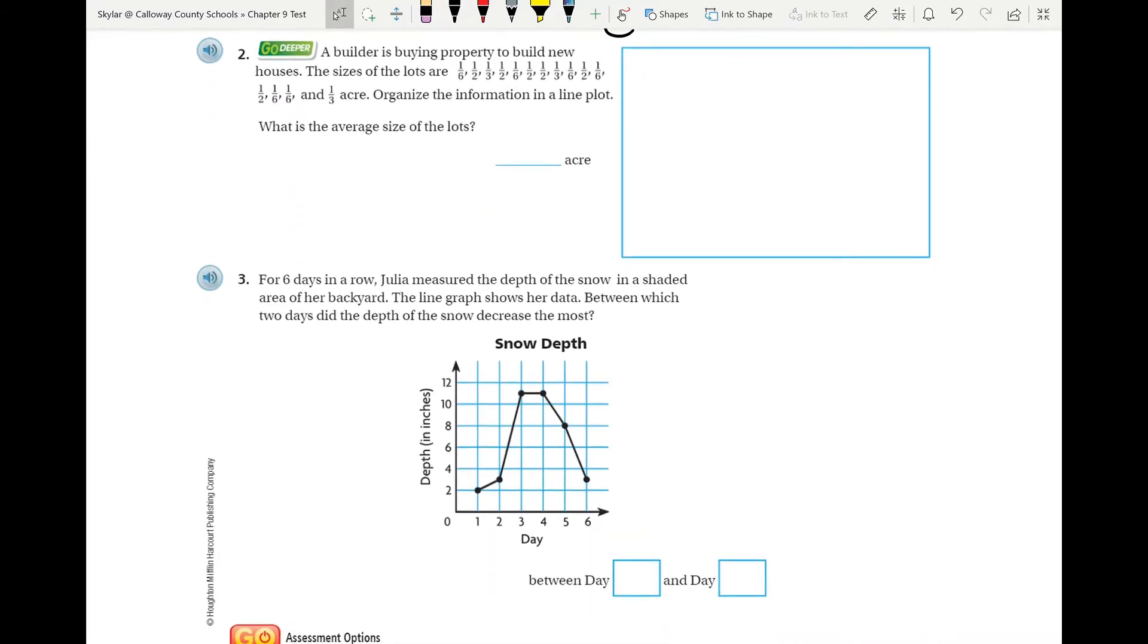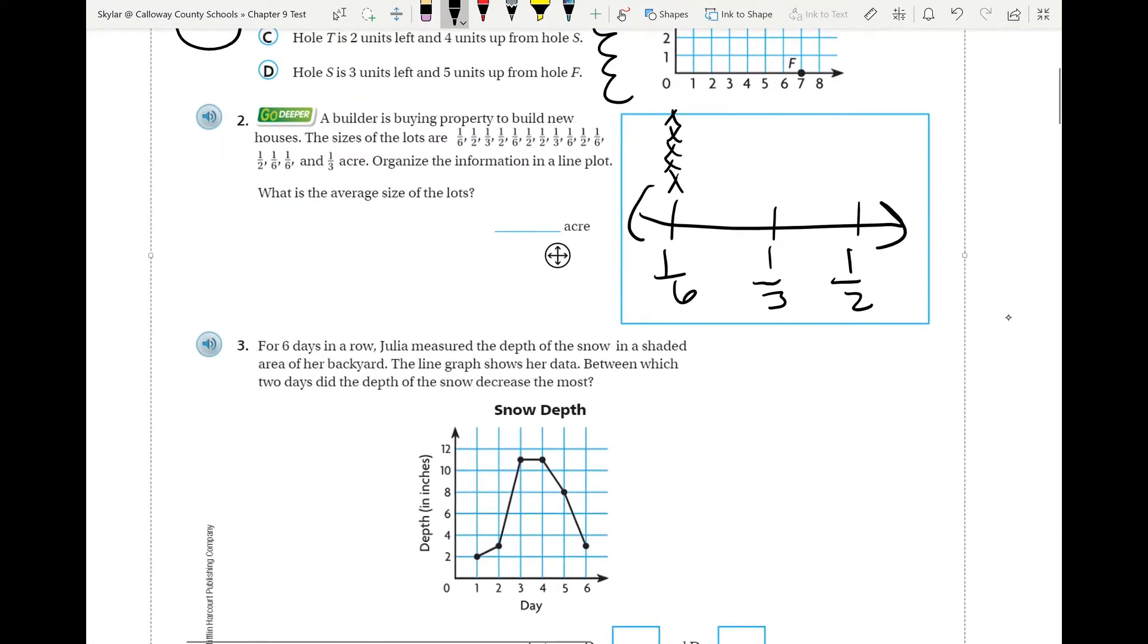Number two, we are working on a line plot, so you'd go ahead and draw that line plot. Pretty easy shape. We have three different numbers: one-sixth, one-half, and one-third. So we'll make our three spots. Then after that, you have to count up your information, see how many of each you have, and that's how you'll end up making your line plot. So for one-sixth you have one, two, three, four, five, six. For one-third we have one, two, three. And for one-half we have one, two, three, four, five.